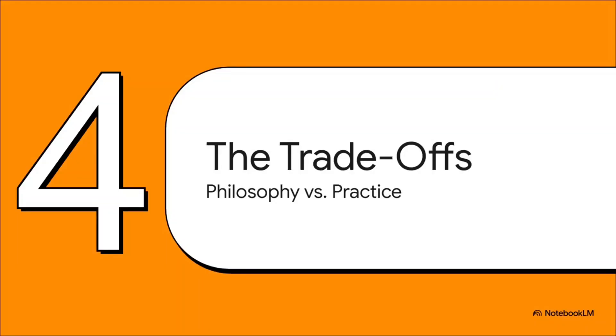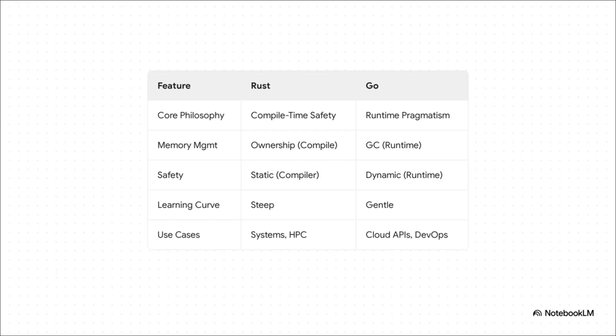So we've got two completely different ways of thinking, which leads to the big question: what's the actual difference in the real world? On one side, Rust's core idea is safety at compile time, enforced by the borrow checker. The result is a famously steep learning curve, but it's perfect for things like operating systems or embedded devices where every ounce of performance and safety matters. On the other side, Go is all about pragmatism at runtime, using tools like the garbage collector. The learning curve is way gentler, making it a favorite for building cloud services and DevOps tools where you need to move fast.